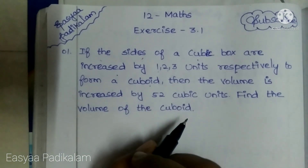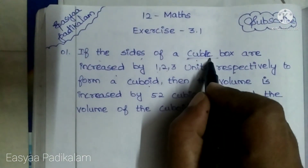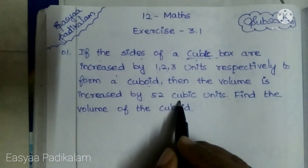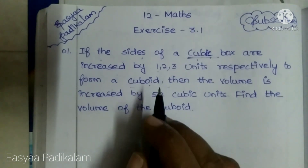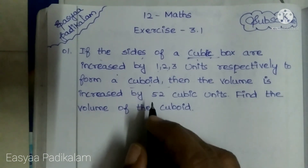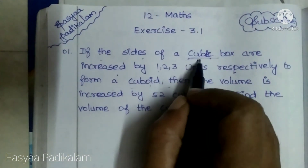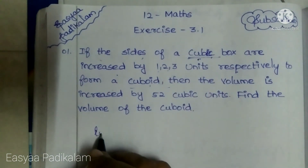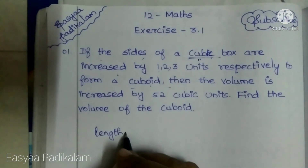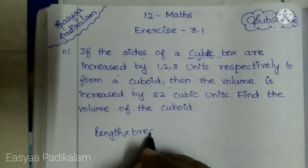Find the volume of the cuboid. If we have a cubic box, then we will have a cube. The sides of the cube are 3 sides: length, breadth, height. Volume equals length into breadth into height.